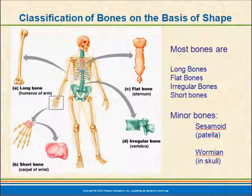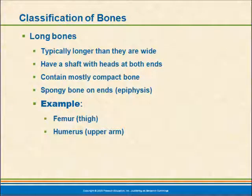We classify bones based on shape. There are long bones and flat bones, irregular bones and short bones, and a couple of minor types — sesamoid bones, which make up the patella, and wormian bones. We have just various numbers of wormian bones; they are little tiny bones that form as the plates are closing in our skull, maybe grain-of-sand to BB size. The structure of long bones: they are typically longer than they are wide, have a shaft with a head at both ends, and contain mostly compact bone with spongy bone on the ends.